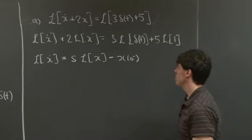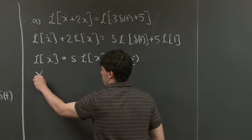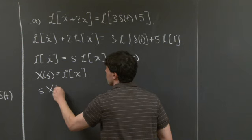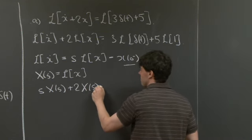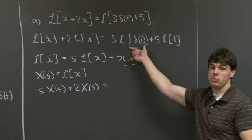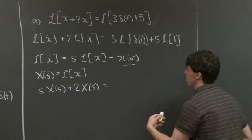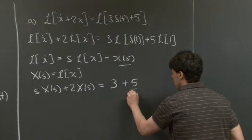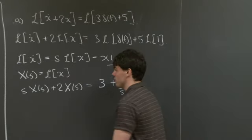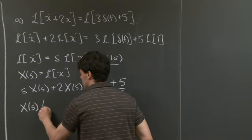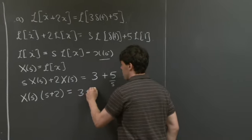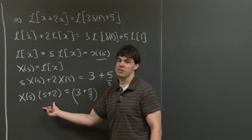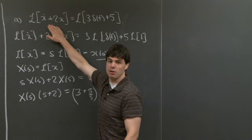We're told that x of 0 minus is 0, so that term vanishes. Writing X(s) for the Laplace transform of x, we now have s times X(s) plus 2X(s) on the left-hand side. The Laplace transform of the delta function is 1, so the right-hand side is 3 plus 5 over s. Factoring the left-hand side gives X(s) times (s plus 2) equals 3 plus 5 over s. Note that s plus 2 is the characteristic polynomial of x_dot plus 2x.